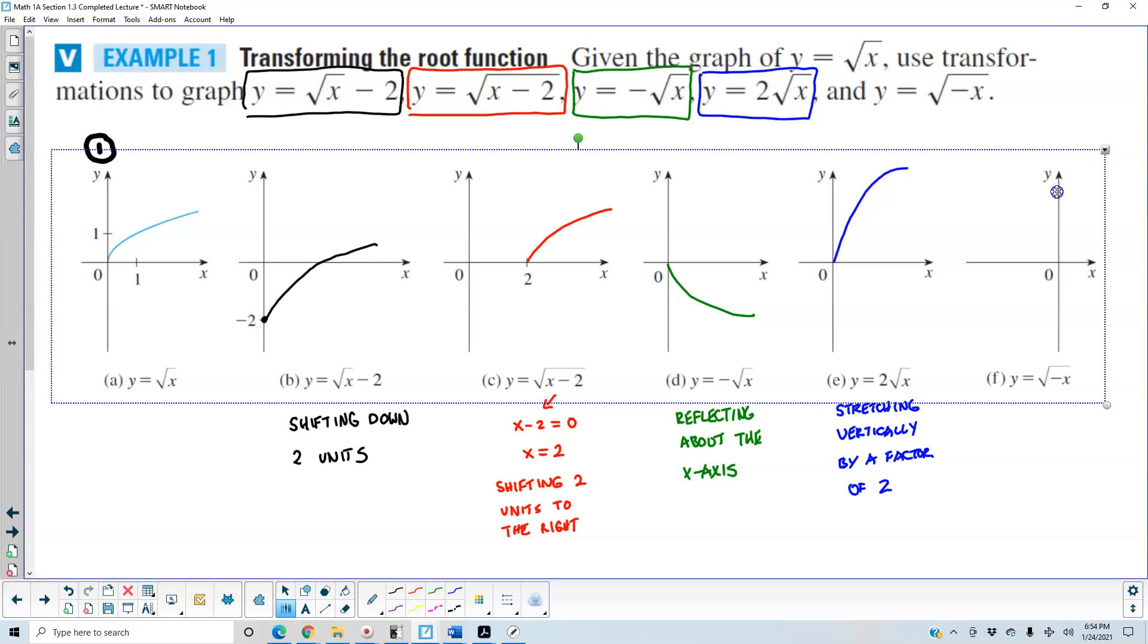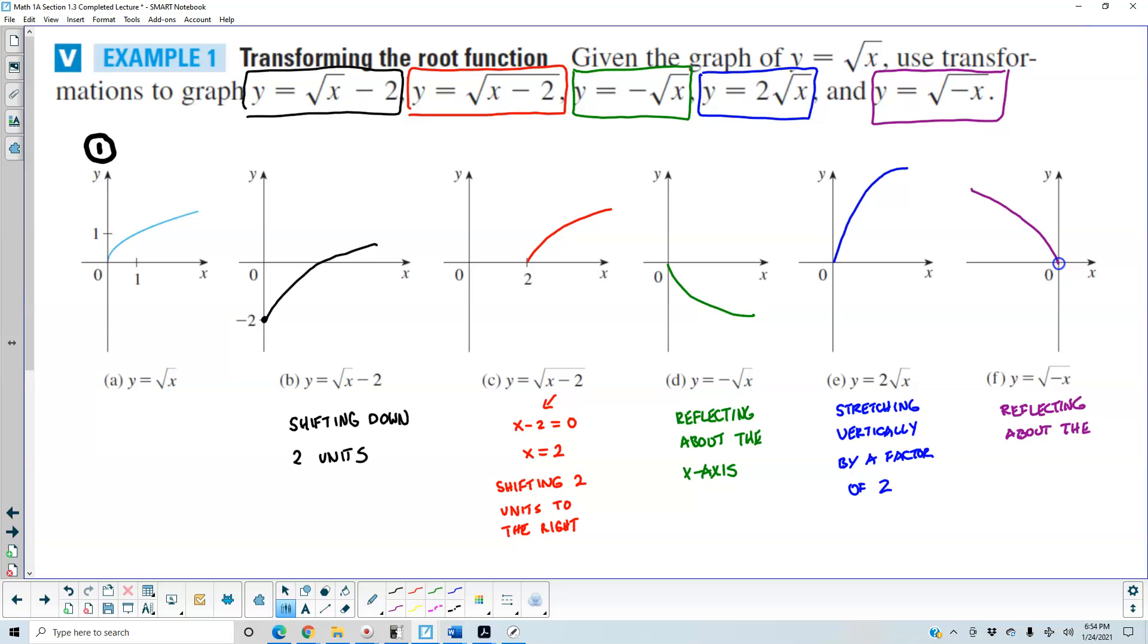And the last one is y which is equal to the square root of negative x. So that means we're reflecting it about the y-axis. So reflecting about the y-axis is going in that direction. We are reflecting about the y-axis.